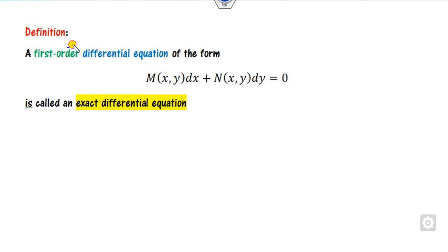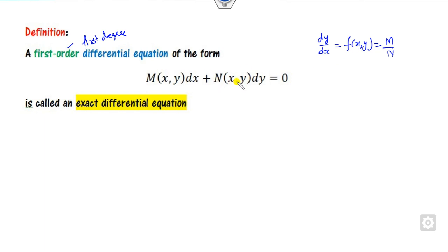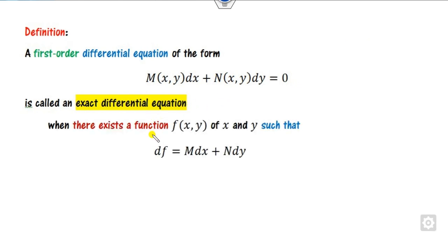Any differential equation of the first order and first degree — in general you can write dy/dx = f(x,y), or it can be written as M over N. This differential equation is said to be exact when you are able to find a function f such that its total derivative equals M dx + N dy. If you are able to find this function f, then we call it an exact differential equation.